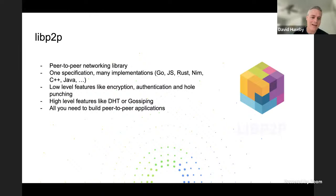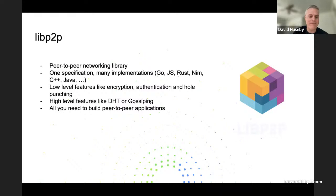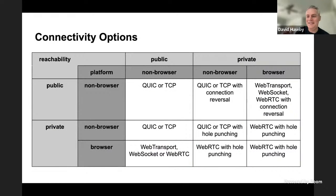In addition to all of that, we also add high-level features like DHTs and gossiping, mostly for peer discovery and for doing global state synchronization. Basically, everything is in there in LibP2P that you need.